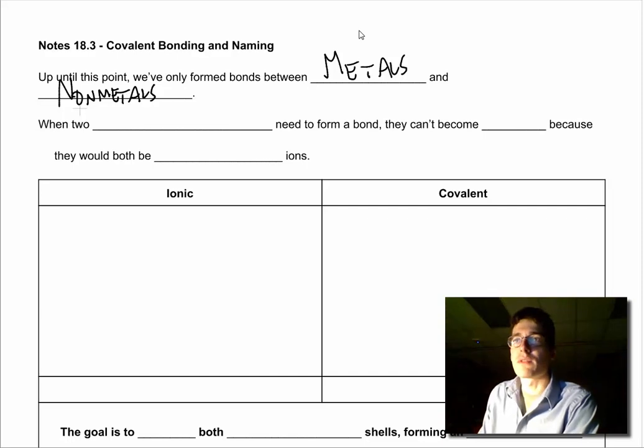The problem comes in when we have two non-metals that need to form a bond. There are a lot of compounds that form between two non-metal atoms, like oxygen is an O2 molecule with two non-metals.